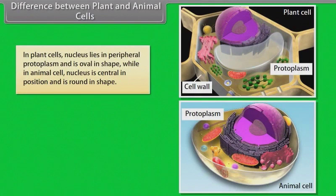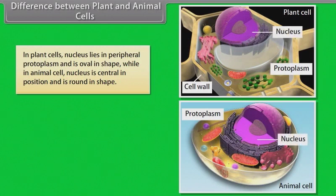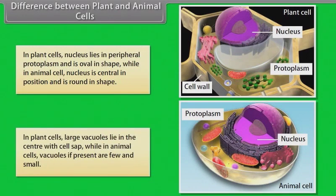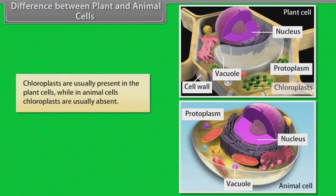In plant cells, the nucleus lies in the peripheral protoplasm and is oval in shape, while in animal cells the nucleus is central in position and is round in shape. In plant cells, large vacuoles lie in the center with cell sap, while in animal cells vacuoles, if present, are few and small. Chloroplasts are usually present in plant cells, while in animal cells chloroplasts are usually absent.